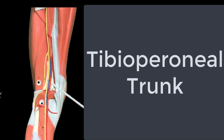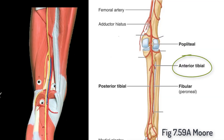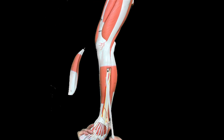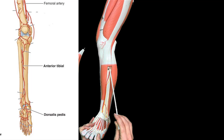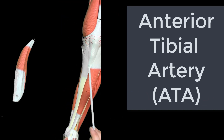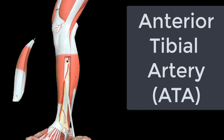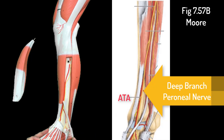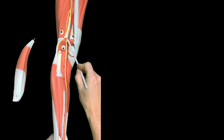What demarcates where we stop calling it the popliteal artery and start calling it the tibial peroneal trunk is another branch that comes off to go through the space between the tibia and fibula — through the interosseous membrane — to supply the anterior compartment. We call this the anterior tibial artery. Here's the tibia, here's tibialis anterior, and you can see the anterior tibial artery running against the interosseous membrane with a little nerve branch — the deep branch of the peroneal nerve — running with it.